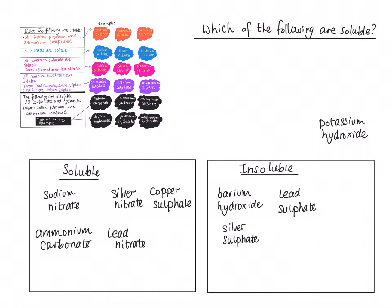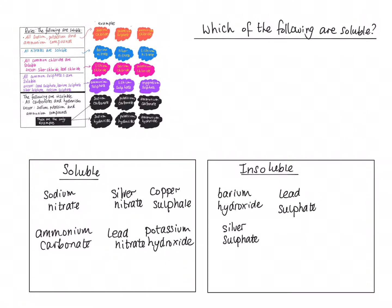Last but not least, potassium hydroxide: all sodium, potassium, and ammonium compounds are soluble. Hydroxides are generally insoluble, but the exception is that sodium, potassium, and ammonium carbonates and hydroxides are soluble. So potassium hydroxide is the exception to the rule about carbonates and hydroxides being insoluble, and potassium hydroxide is soluble.